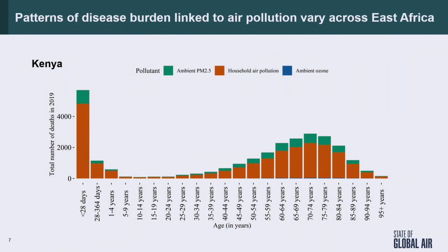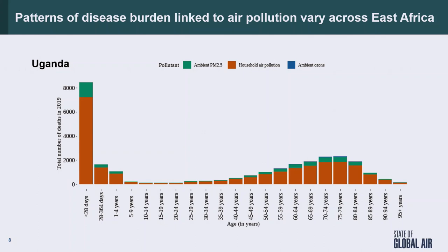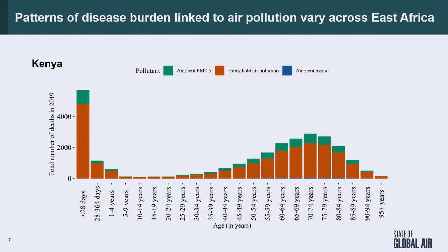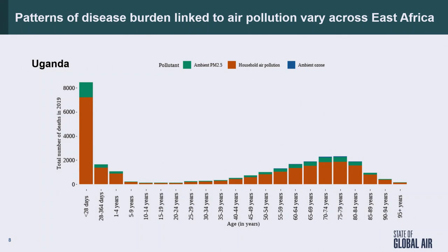This is Kenya, and we're looking at the distribution of burden linked to air pollution by age. I was surprised the first time I saw this — kids under 28 days show the biggest burden. It's an open question whether that's due to exposure to household air pollution. The elderly also show another big peak. The orange represents household air pollution, and the green represents ambient air pollution. You have a huge issue with household air pollution that we need to think about. The pattern is not too different in Uganda, though the scale is different — around 8,000 versus 4,000 — meaning a heavier burden in Uganda, which may be more rural.